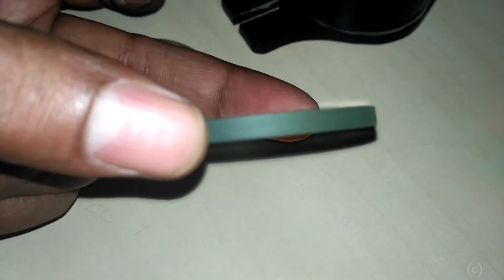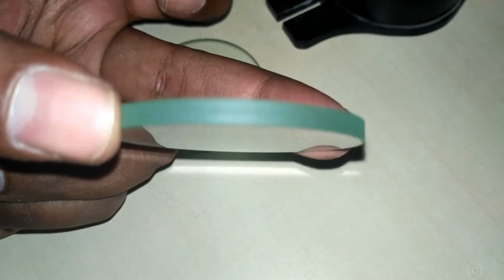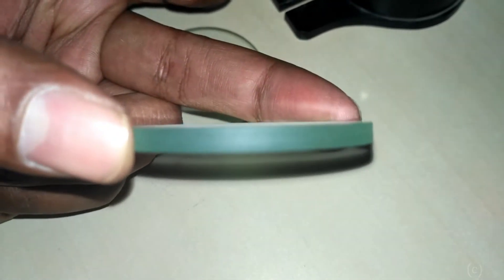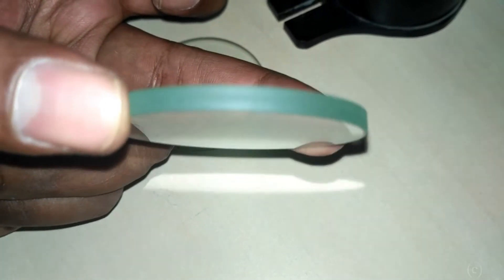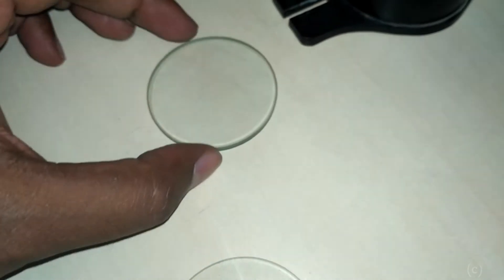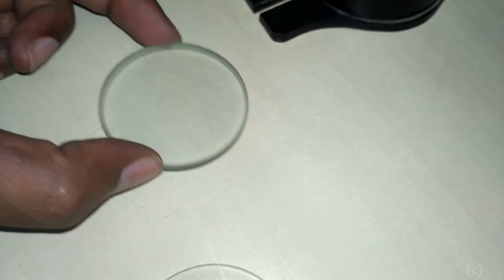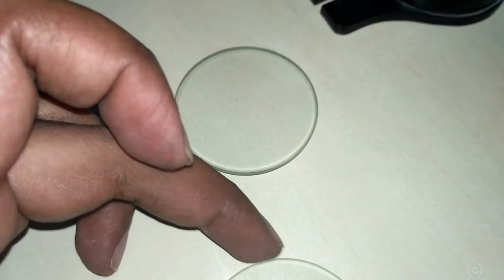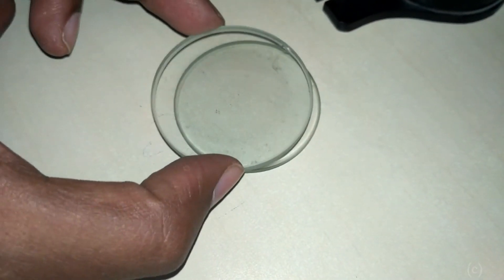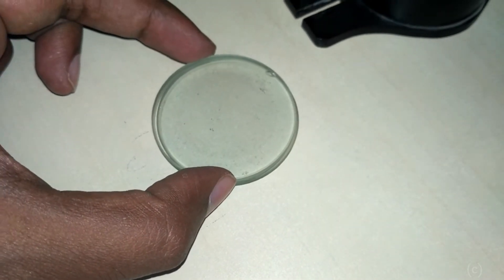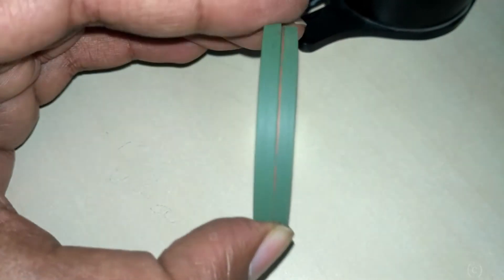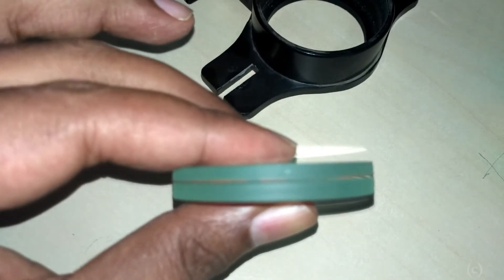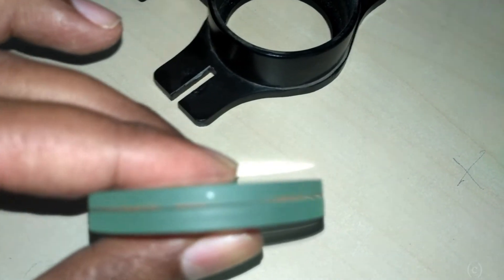This is the plano convex lens. Lower side is curved and top side is plain. And this is plain glass plate. Plain glass plate and this plano convex lens will form thin air film. So, thin air film is produced between these two glass plates.